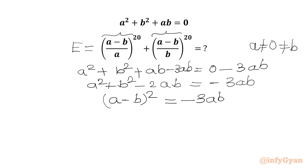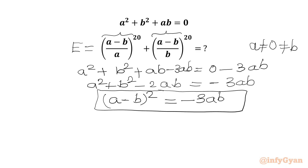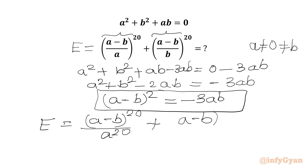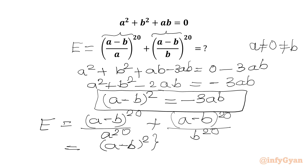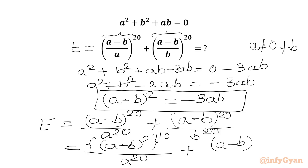Now we will use this result for our expression evaluation. I will write E = (a-b)²⁰. We can split the numerator with the exponent and denominator separately with the exponent, plus (a-b)²⁰ over b²⁰. Now I can write (a-b)²⁰ as ((a-b)²)¹⁰, and the denominator as (a-b)²⁰ over b²⁰.